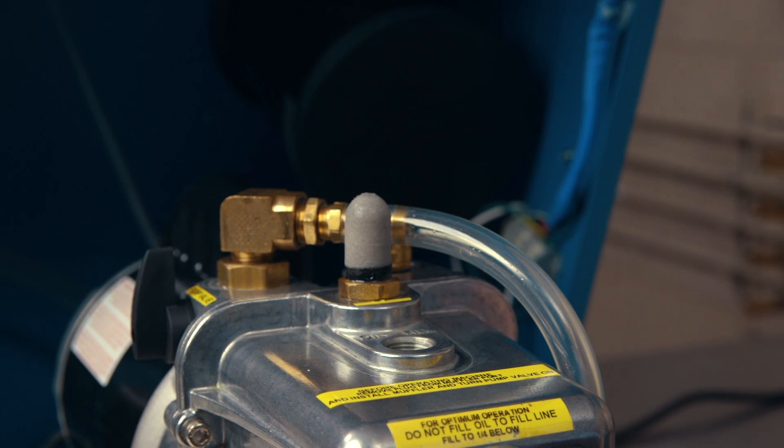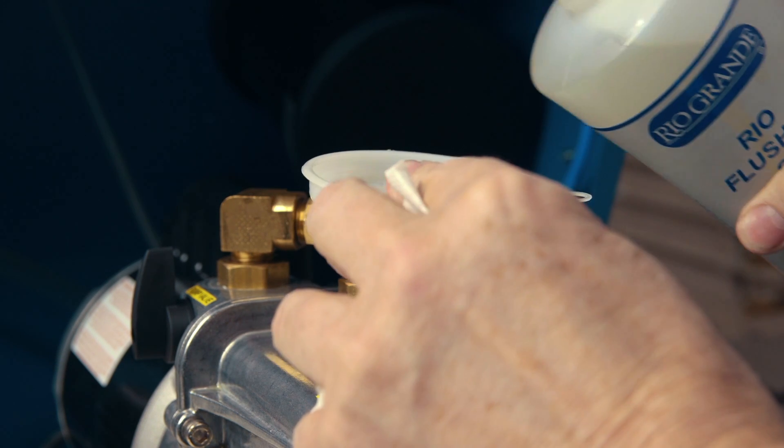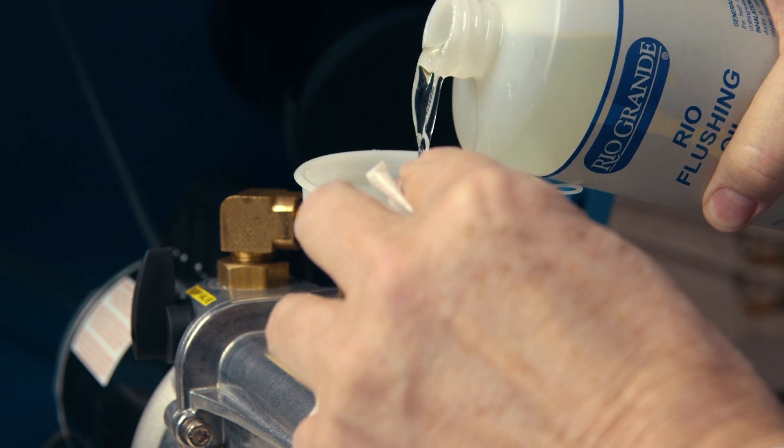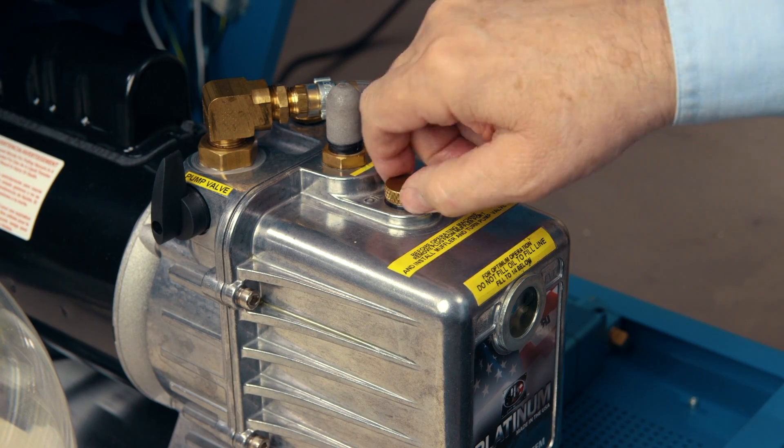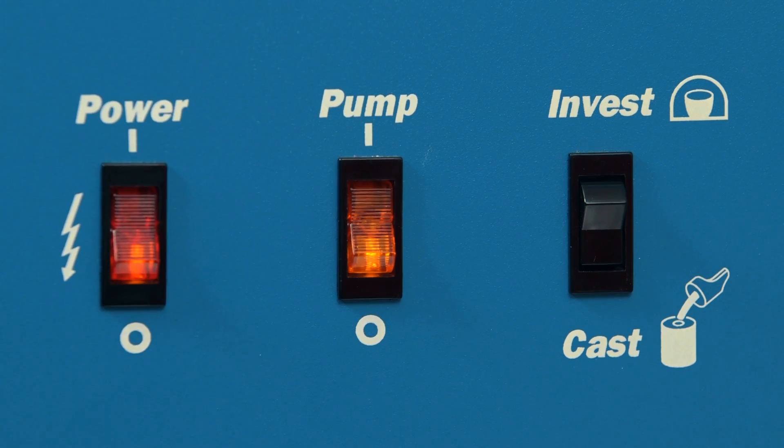fill the pump two-thirds full of flushing oil. Because it is lightweight, the flushing oil should never be left in the machine and used to invest or cast. Close the fill cap and turn the machine on. Allow it to run for three or four minutes. Then turn off the machine.